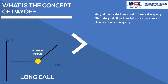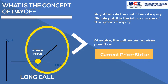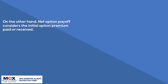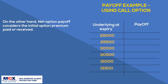Option payoff is the cash flow at expiry — basically the intrinsic value of the option at expiry. It is the difference between the strike price and the underlying price at expiry. For a call option, it is current price minus strike price. For a put option, it is strike price minus current price. Net option payoff considers the initial premium paid or received. Let's consider an example of a payoff table.